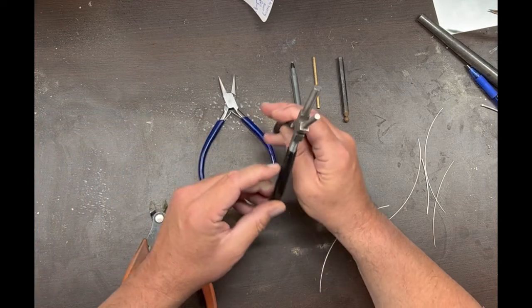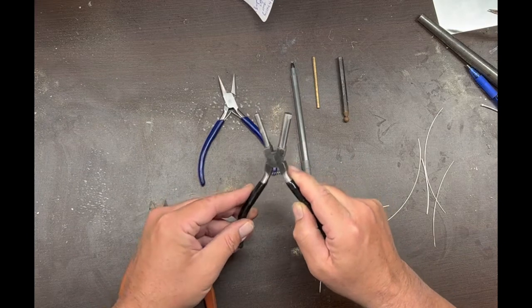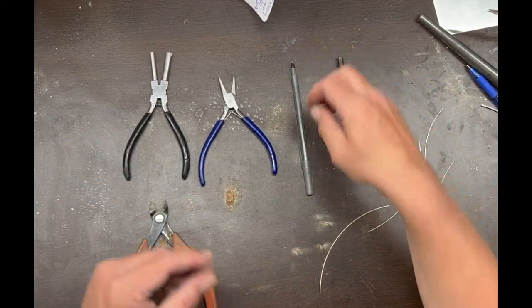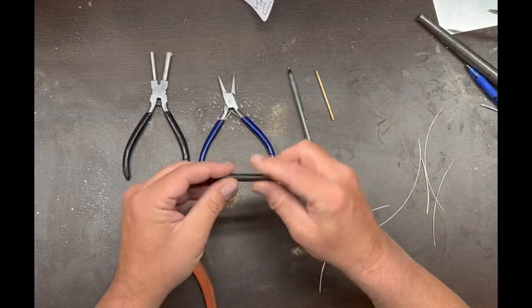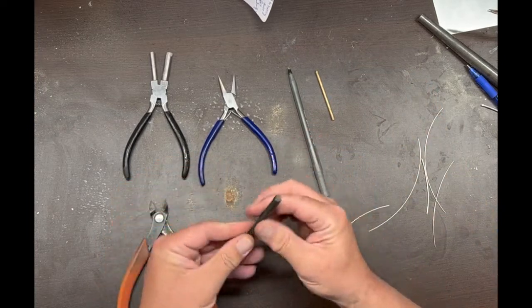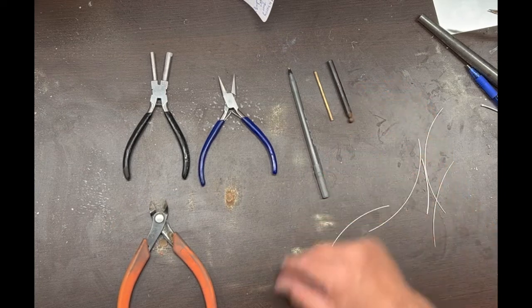Of course you can use things like bail making pliers, which are great for making jump rings, but just as easy is to take a little brass rod or a pen or one of these dapping punches, all of which are different diameters and can produce different sized jump rings.